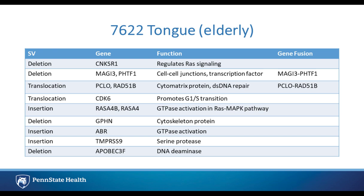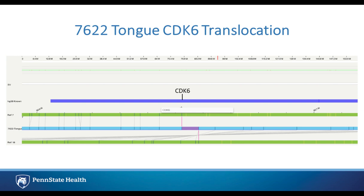Taking a closer look at the genes involved in these structural variations, I see involvement in quite a number of pathways. There's a deletion in the CNK-SR1 gene which regulates RAS signaling, a translocation involving CDK6 which promotes the G1/S transition, insertions affecting different RASA genes involved in the RAS-MAP kinase pathway, a deletion in the APOBEC3F gene involved in DNA deaminase activity — which has been implicated in head and neck cancer in recent literature — and different gene fusions, including one involving a translocation with RAD51D, which is involved in DNA repair.